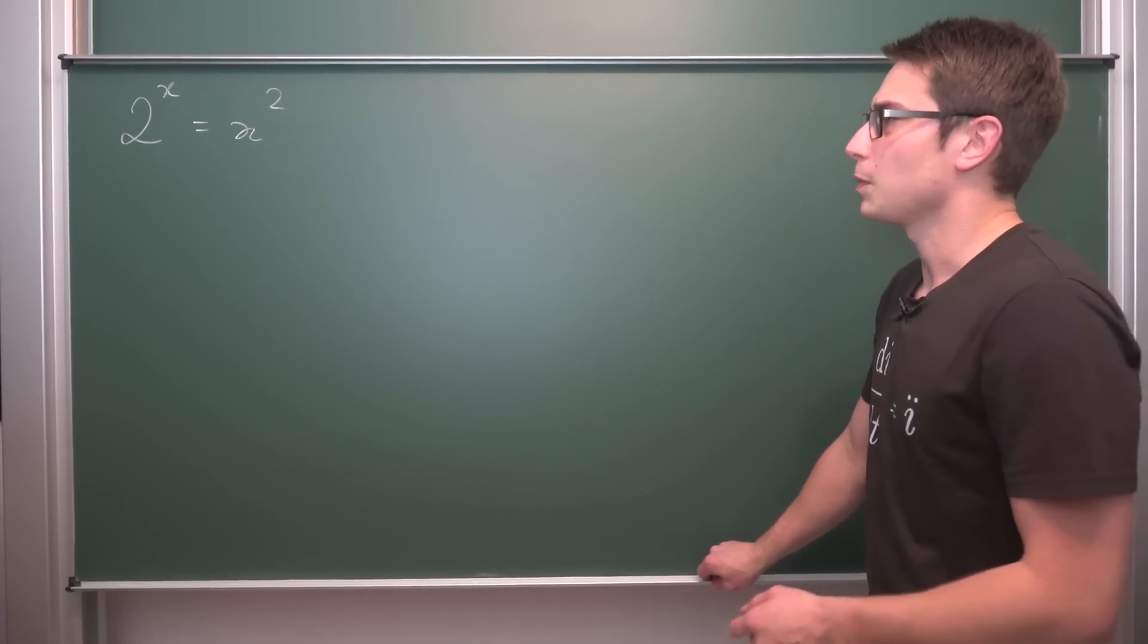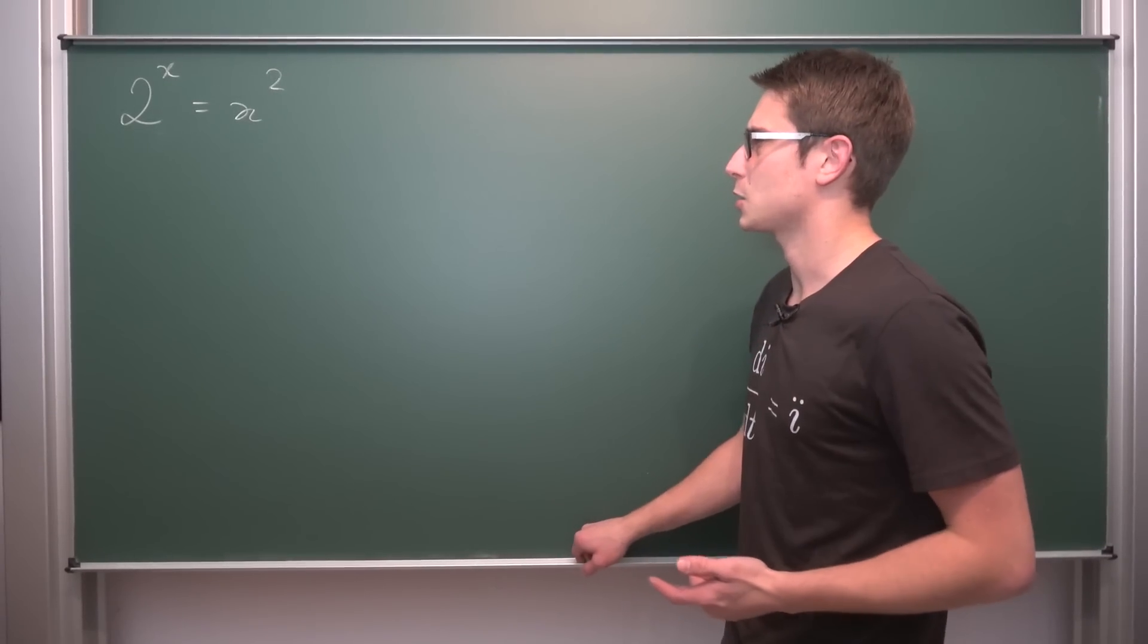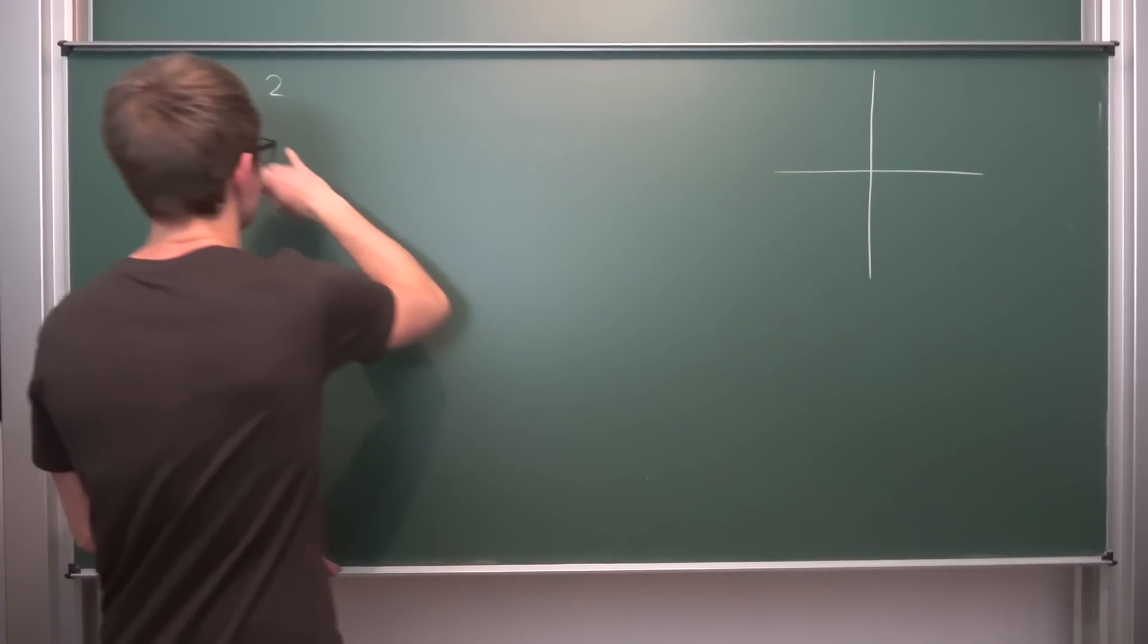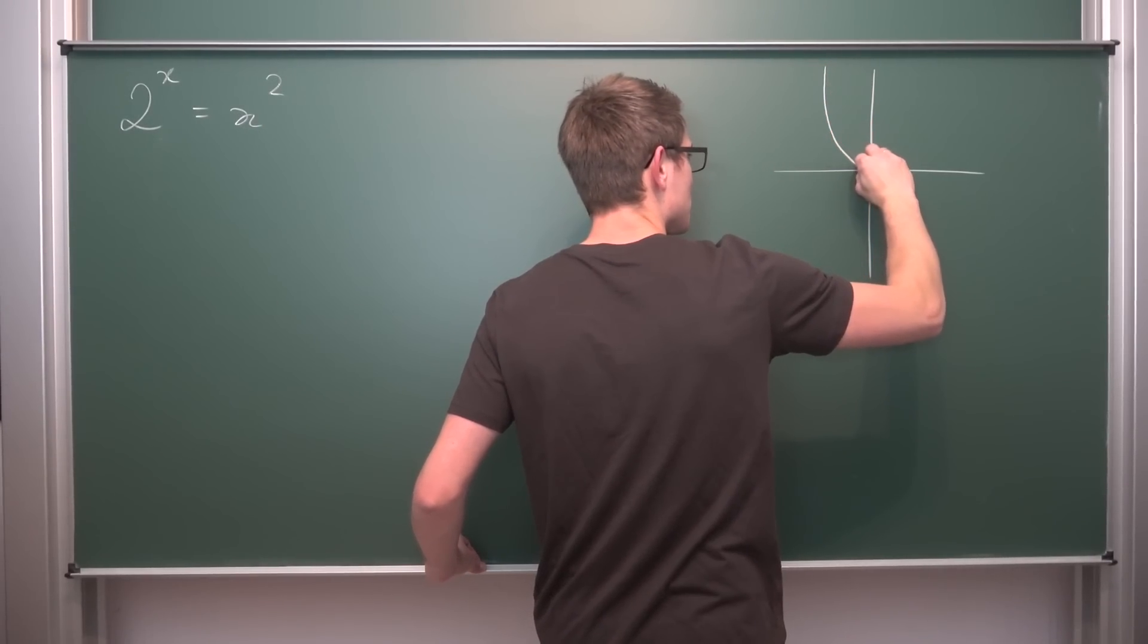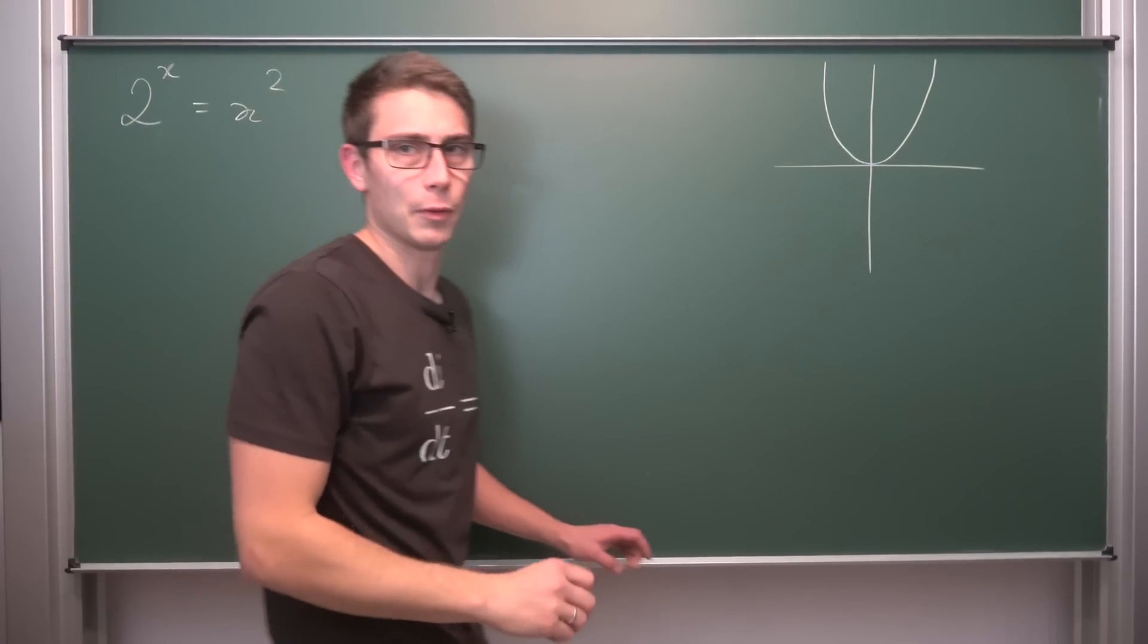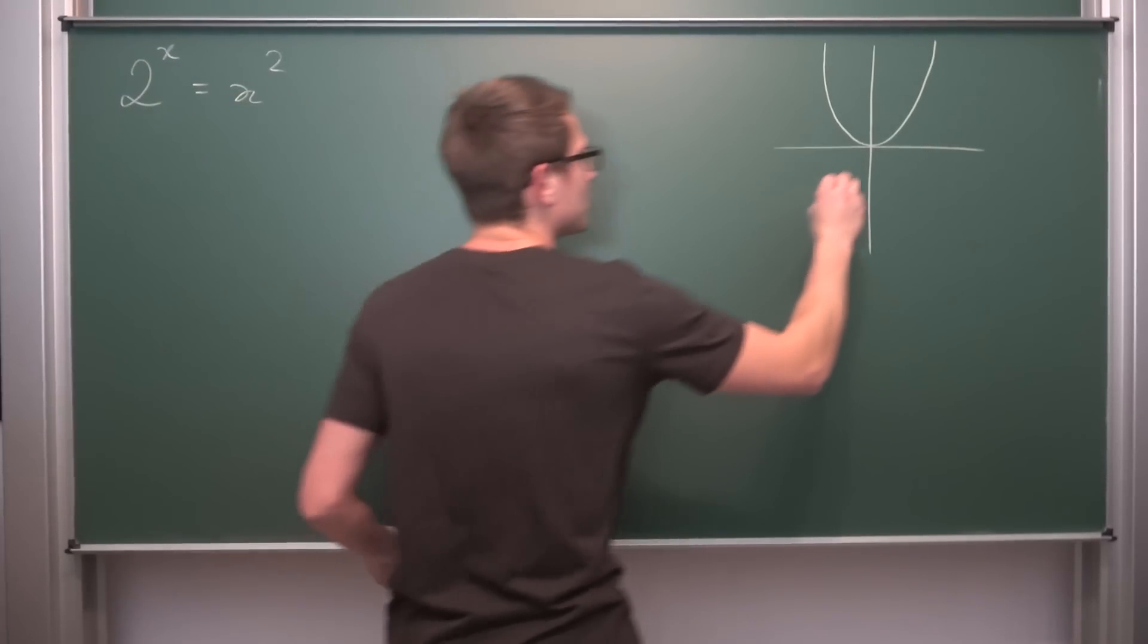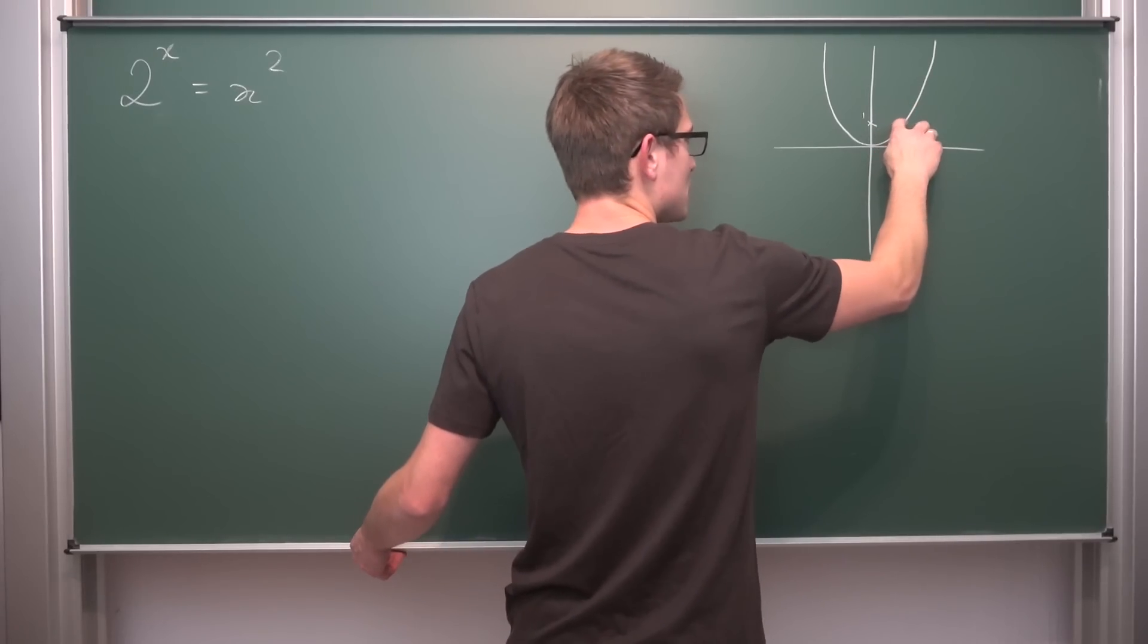So when I solved this problem the first time around, I suppose there were only two solutions actually. What I did was graph the whole thing. Now if we were to graph it, on the right hand side what we have is just a regular parabola, obviously. Meaning it looks something like this. This is just a parent function passing right through zero zero.